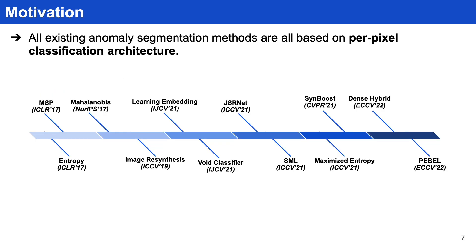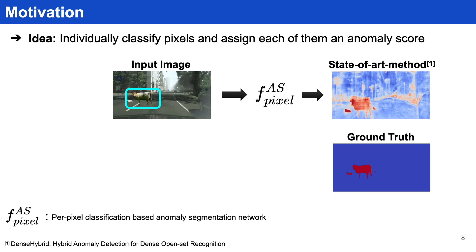From the past few years, researchers have introduced a plethora of algorithms that are based on a pixel classification architecture and intended for anomaly segmentation. The idea behind using a per-pixel classification architecture is to individually classify each pixel and assign them an anomaly score. Using this anomaly score, we identify them as anomalous or non-anomalous.